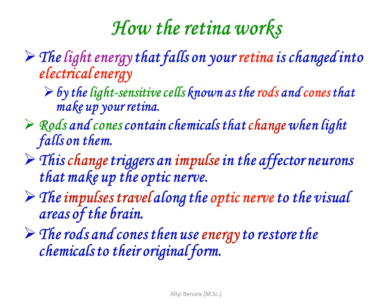How the retina works: the light energy that falls on the retina is changed into electrical energy by light-sensitive cells known as rods and cones. Rods and cones contain chemicals that change when light falls on them. This change triggers an impulse in the neurons that make up the optic nerve. The impulses travel along the optic nerve to the visual area of the brain. The rods and cones then use energy to restore the chemicals to their original form.